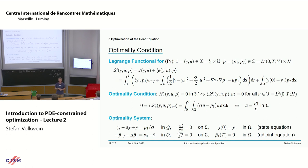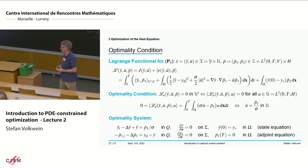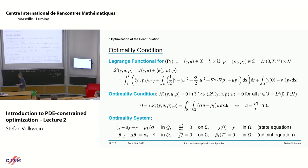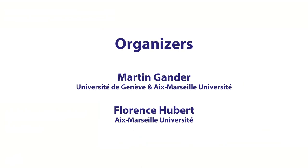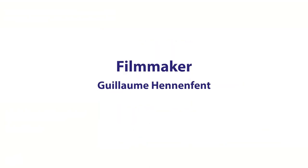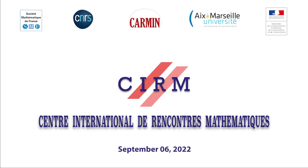Now for the heat equation — combining the ODE and elliptic cases. The cost functional has an integral over time, the PDE is the heat equation with control on the right-hand side and Neumann boundary conditions, plus an initial condition. The optimality system mixes both: the weak formulation includes the time derivative and Laplacian, an initial condition E2, and the adjoint equation runs backward in time — consistent with the ODE case. The CG method applies since this is a convex linear-quadratic problem.